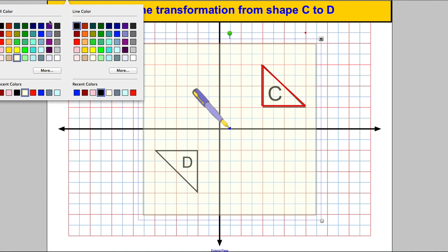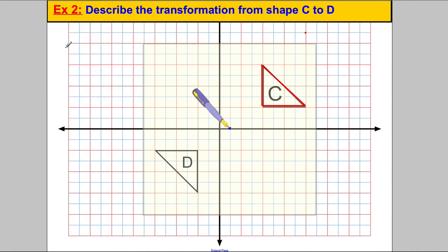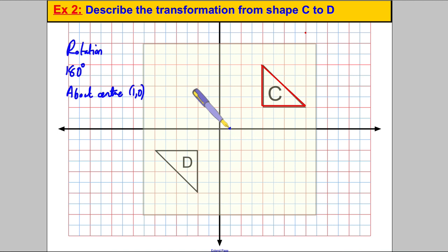So to get full marks I would say: it is a rotation, 180 degrees — you don't have to say clockwise or anticlockwise when it's 180 — and it's about the centre (1, 0), that is 1 across and 0 up. I found that by first trying (0, 0) and then trying different points, holding the pen at each one until I found the rotation that worked.